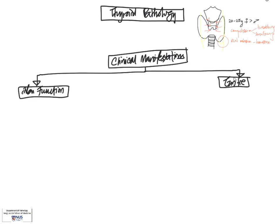A goiter is a non-specific term. It just refers to any enlargement of the thyroid. It can be due to benign or malignant causes. And also, it's very important to take note that abnormal function as well as enlargement can coexist.